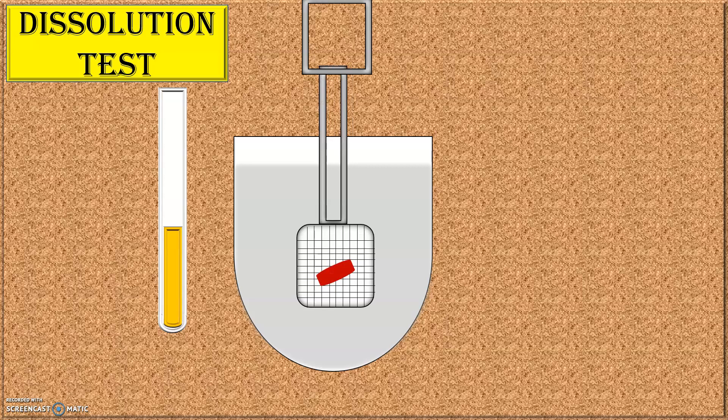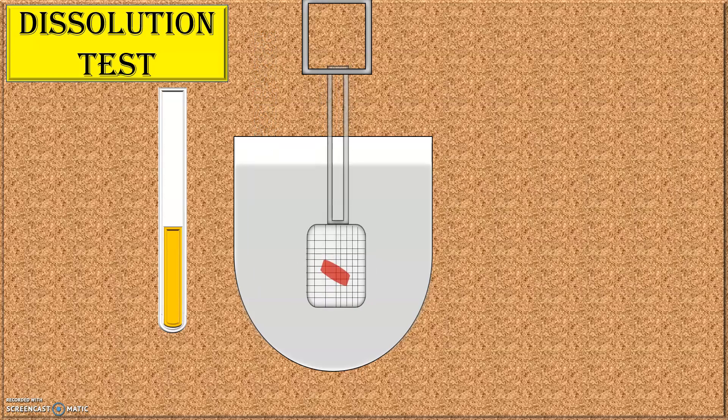Then after specified time interval, with the help of pipette, the sample is withdrawn. And this sample is quantitatively analyzed by using suitable method. After withdrawal of the sample, the medium in the cylindrical vessel is replaced by fresh dissolution medium. Then again the further process is carried out.